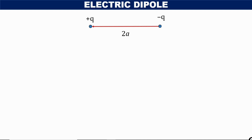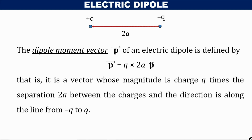Now we are going to discuss the meaning of electric dipole moment. Dipole moment is a vector represented by the letter p, and it is defined as the product of the magnitude of either of the two charges and the distance of separation between them. Since it is a vector, it is directed from the negative to the positive charge.